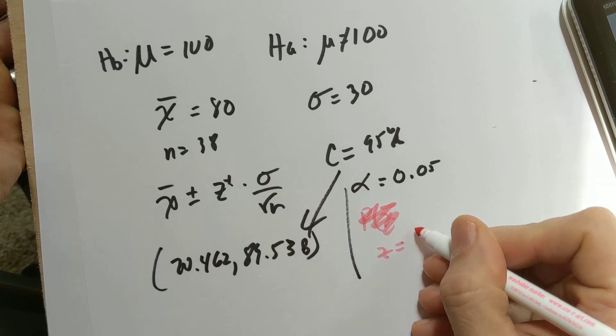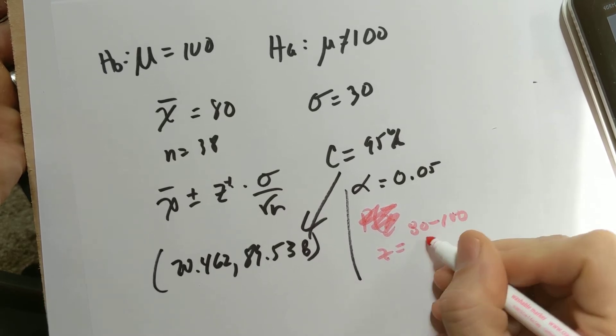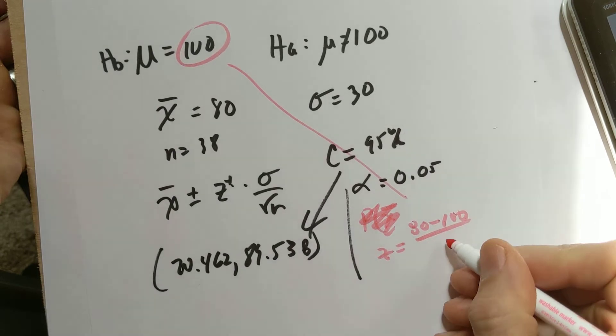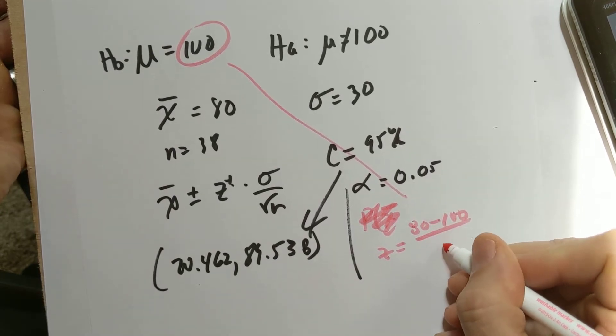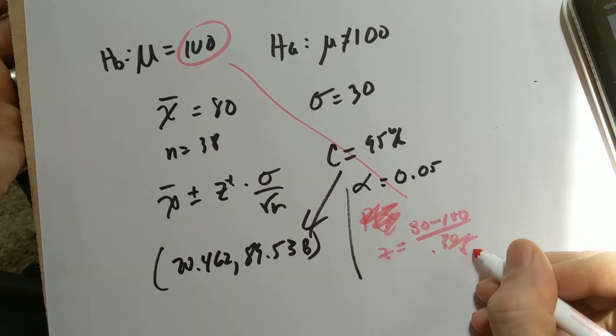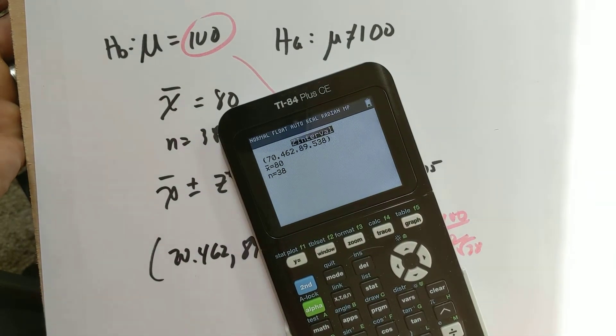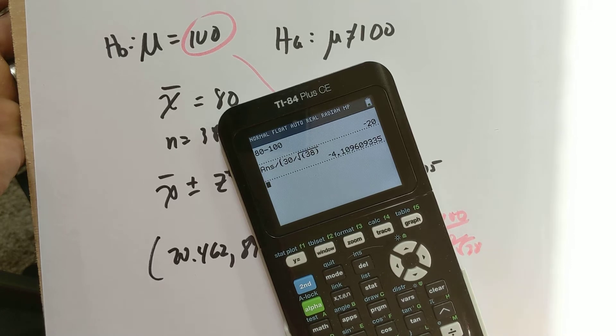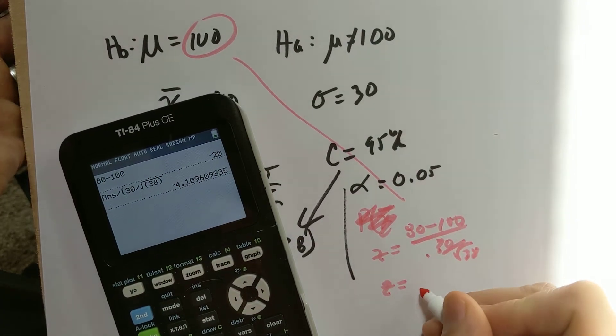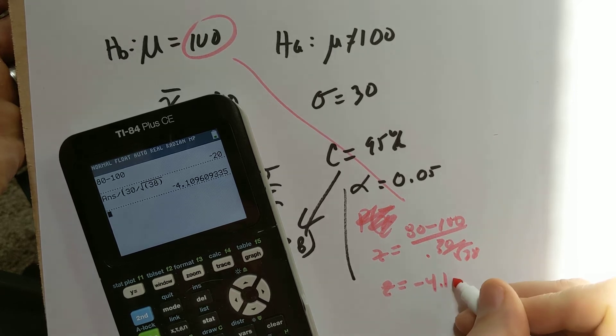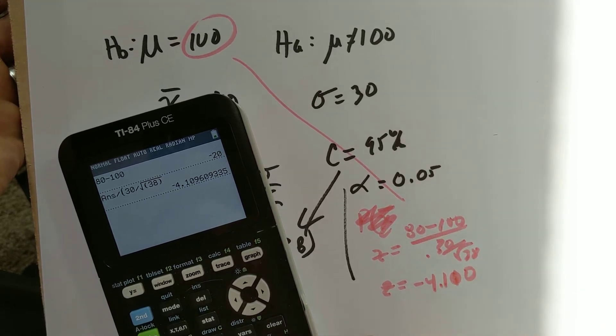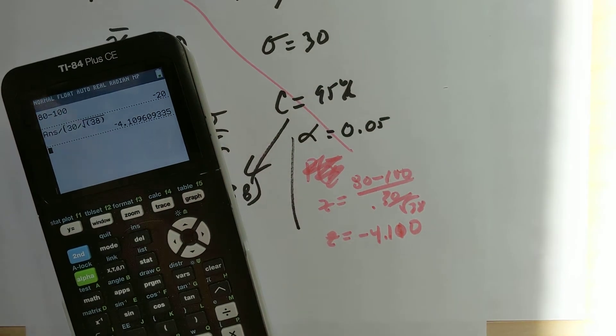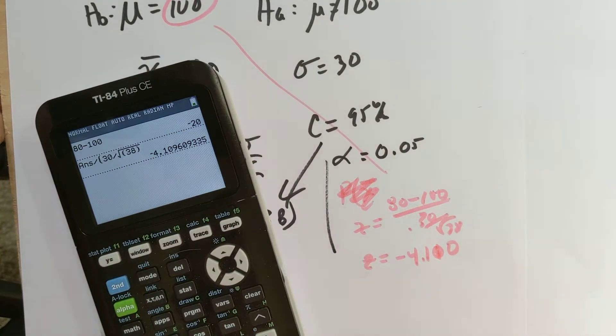The z-score for this particular x-bar will be 80 minus our hypothesis of 100 divided by the standard deviation. The standard deviation in this case would be 30 divided by the square root of 38. So I'll do 80 minus 100 divided by 30 divided by the square root of 38. We got that. Holy moly, that was a significant z-score, negative 4.10. Well, actually it comes out to negative 4.11 with all this crazy rounding again. There's that sun glare again.